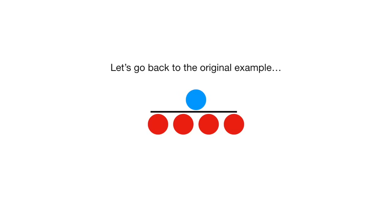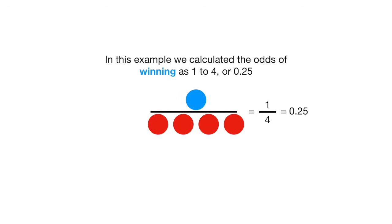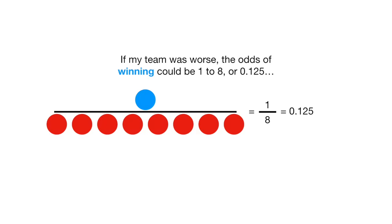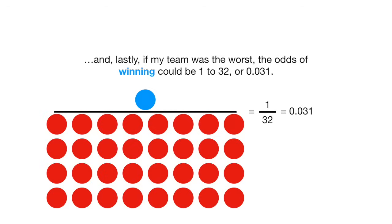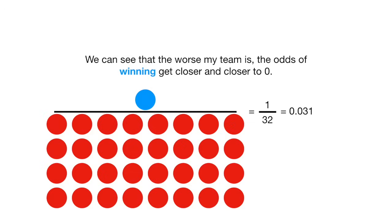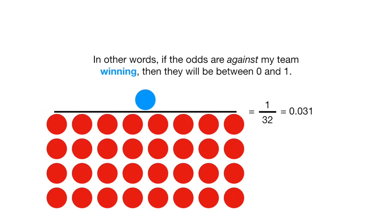Let's go back to the original example. We calculated the odds of winning as 1 to 4, or 0.25. If my team was worse, the odds of winning could be 1 to 8, or 0.125. And if my team was terrible, the odds of winning could be 1 to 16, or 0.063. And lastly, if my team was the worst, the odds of winning could be 1 to 32, or 0.031. We can see that the worse my team is, the odds of winning get closer and closer to 0. In other words, if the odds are against my team winning, then they will be between 0 and 1.